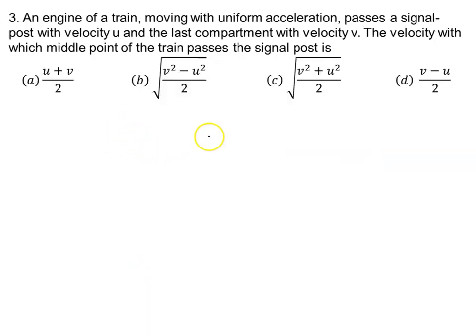Let's say this is a signal post and here the engine of the train is moving. This is the engine of the train and it is moving with velocity u and uniform acceleration.